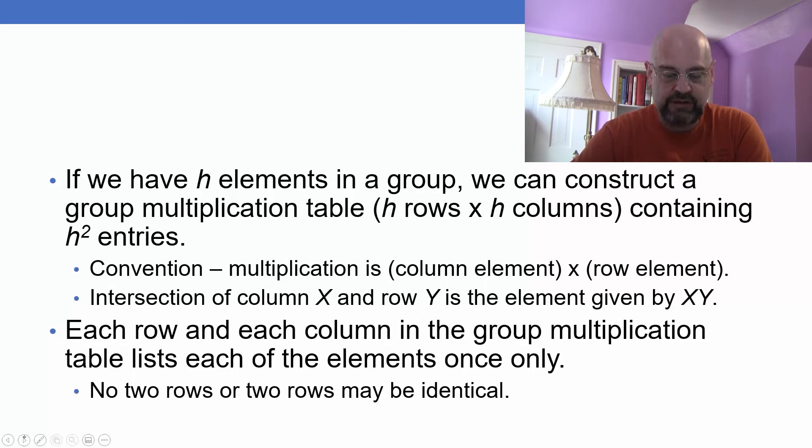The convention is that multiplication is the column element times the row element, because remember that commutation does not usually hold. AB is not necessarily equal to BA. So the intersection of column X and row Y is the element given by XY.